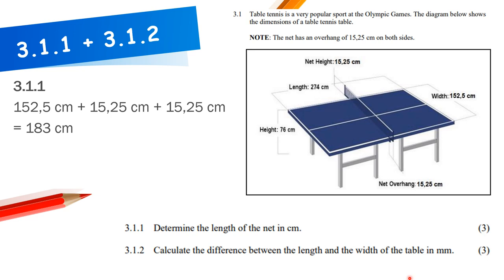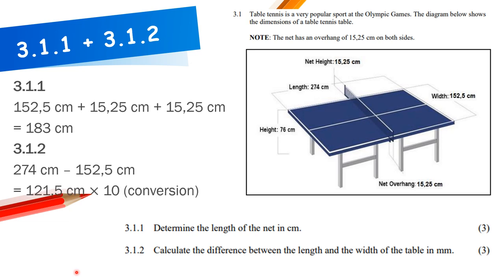Calculate the difference between the length and width of the table in millimeters. All measurements on the diagram are given in centimeters, so the final answer must be converted to millimeters. Length minus width gives 121.5 cm. Multiply by 10 to convert to millimeters: 1,215 mm.